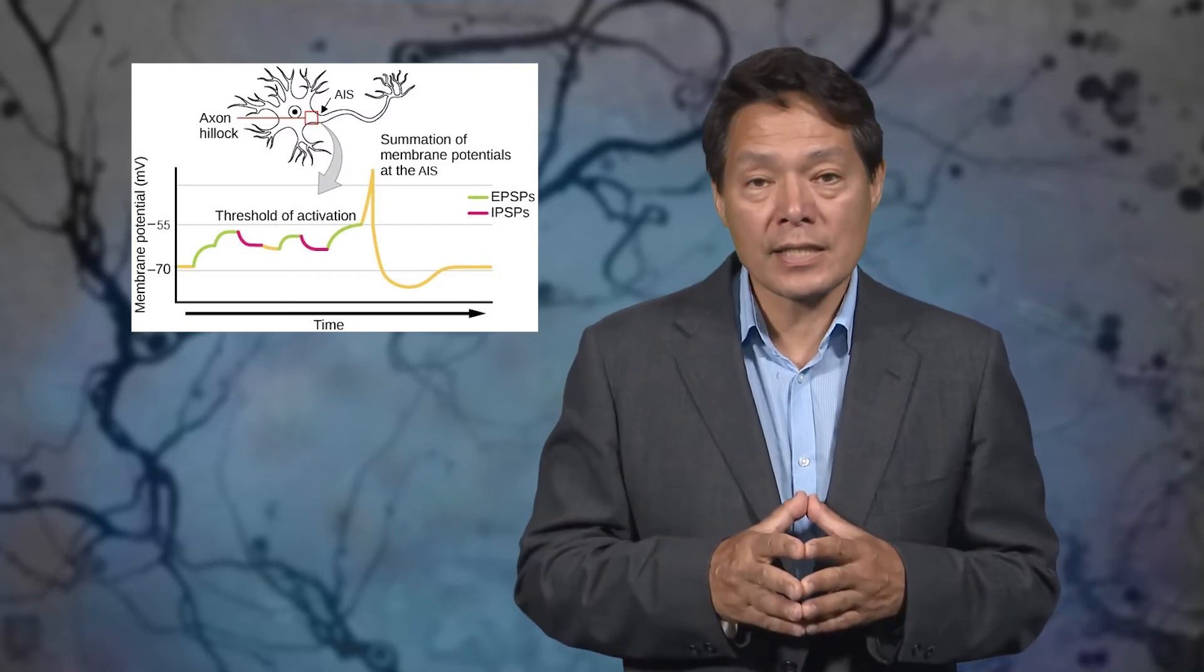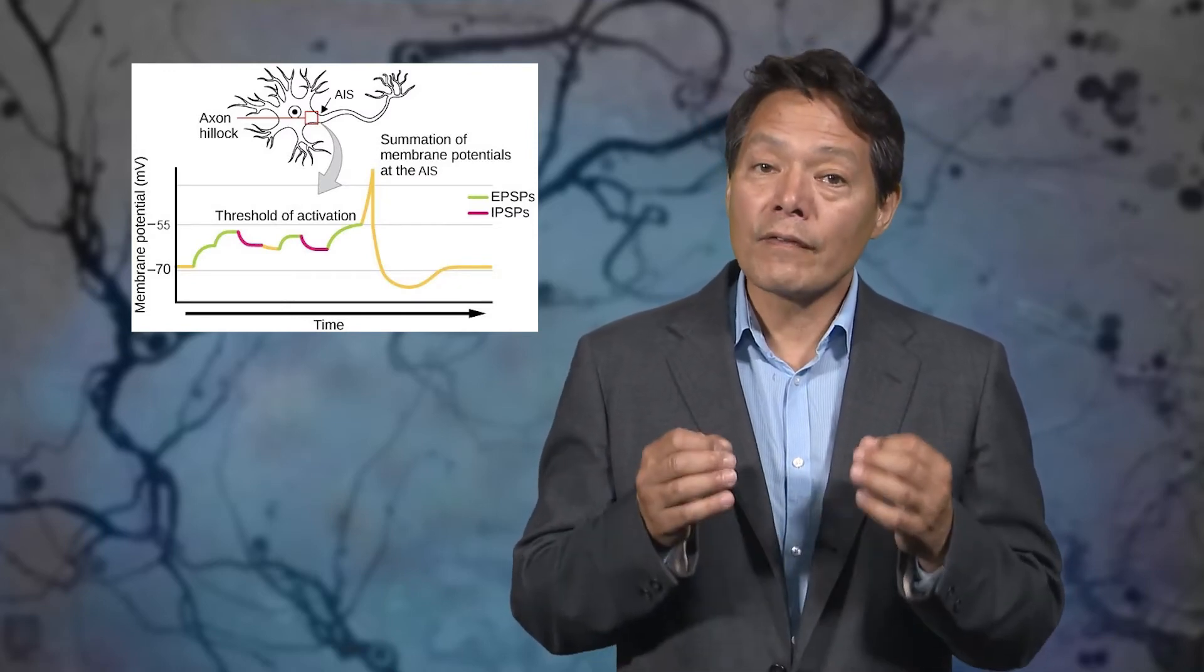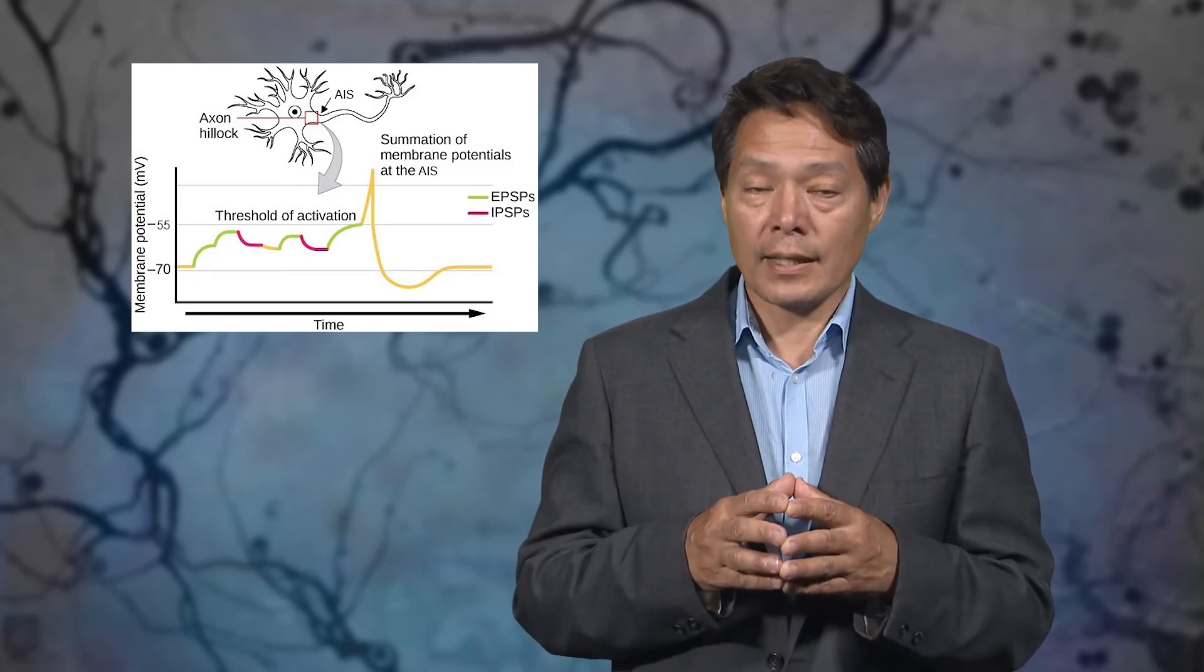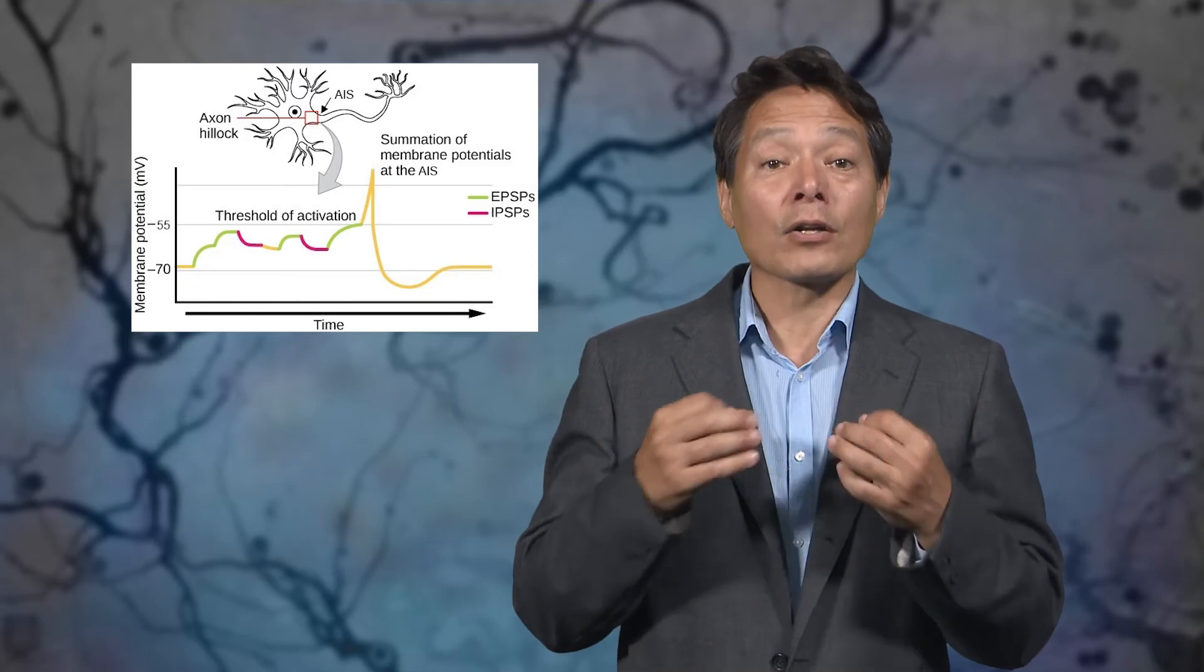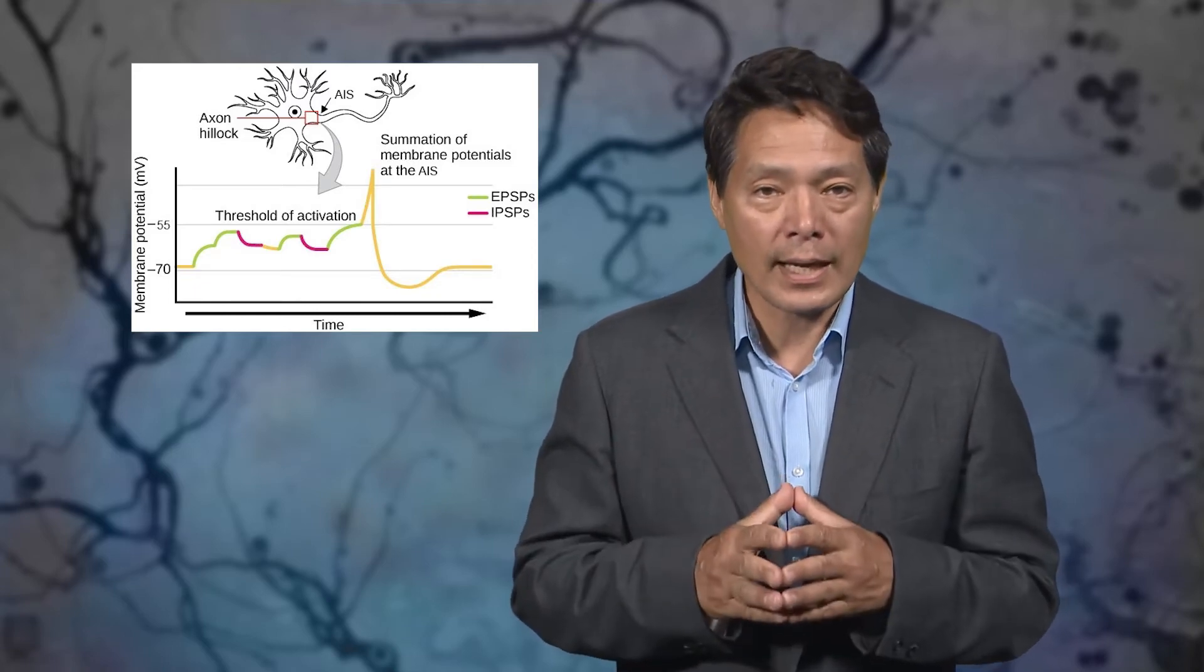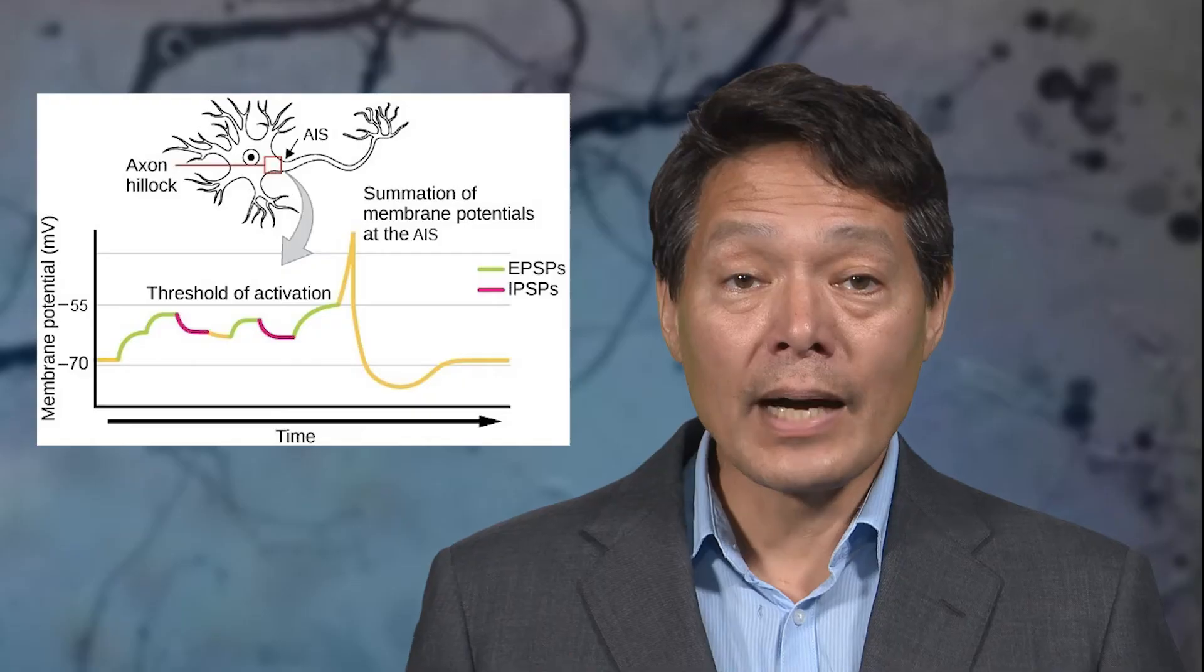In fact, the final decision whether to fire or not is made at the axon hillock. If the firing threshold is reached at the axon hillock, then boom, an action potential is ballistically generated in an all-or-none fashion. There's no such thing as a partial action potential. It either happens or it doesn't.